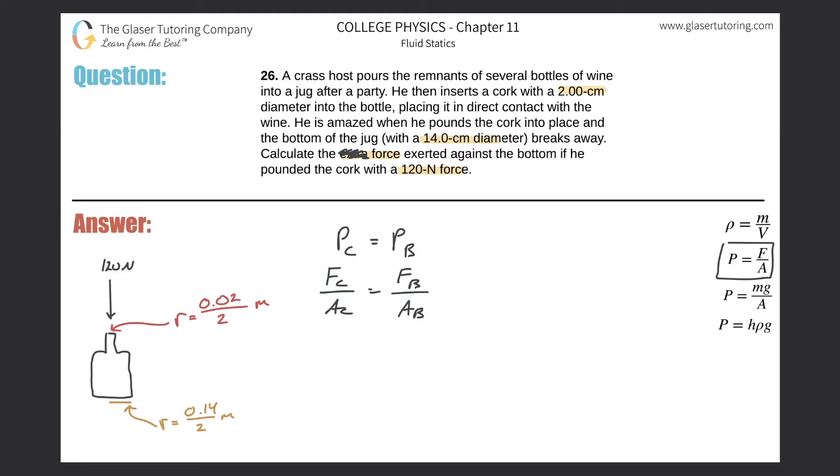F sub b will equal A sub b times F sub c all over A sub c. Let's expand on the areas. The cork is circular and so is the bottom of the bottle.